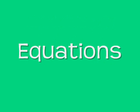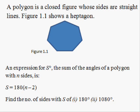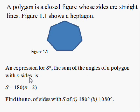Today's lesson will be about equations. A polygon is a closed figure whose sides are straight lines. Figure 1.1 shows a heptagon, an expression for s. The sum of the angles of a polygon with n sides is s equals 180 times n minus 2. Find the number of sides in a polygon with an angle sum of i, 1800.